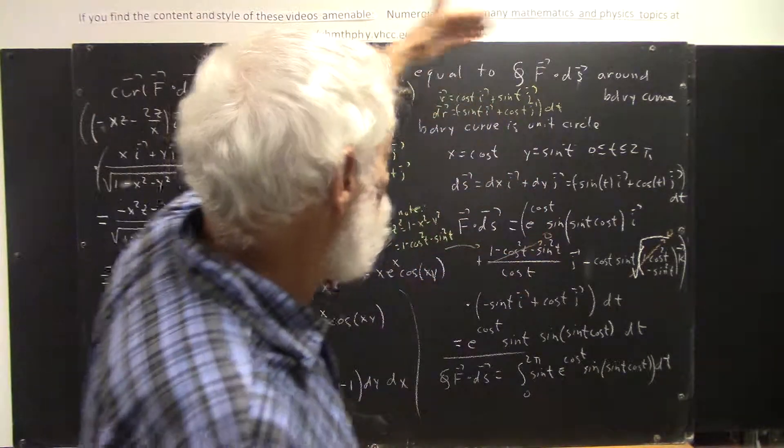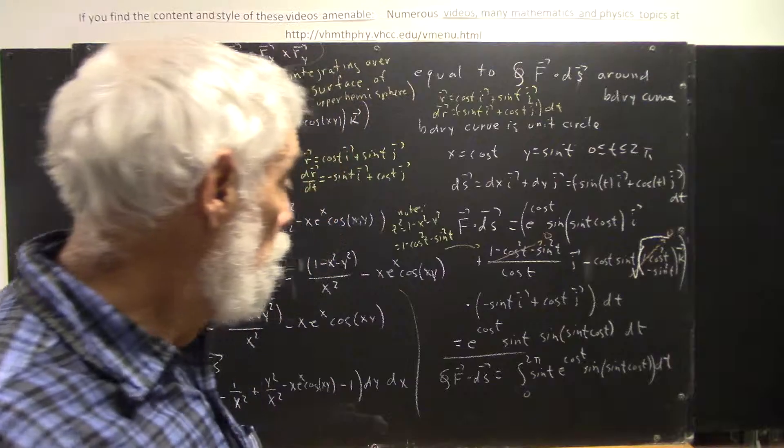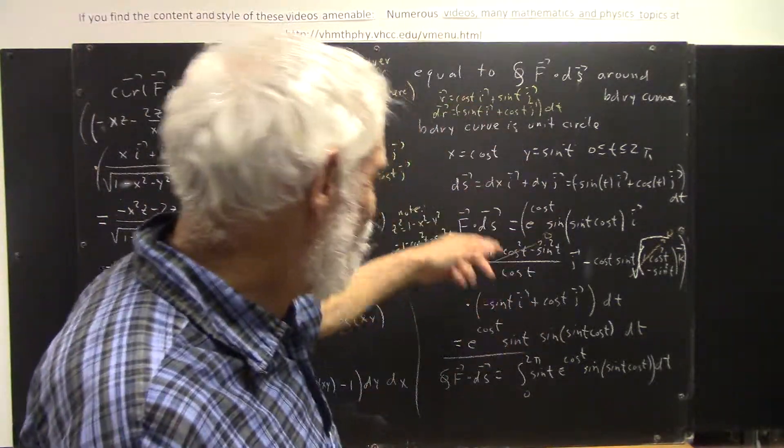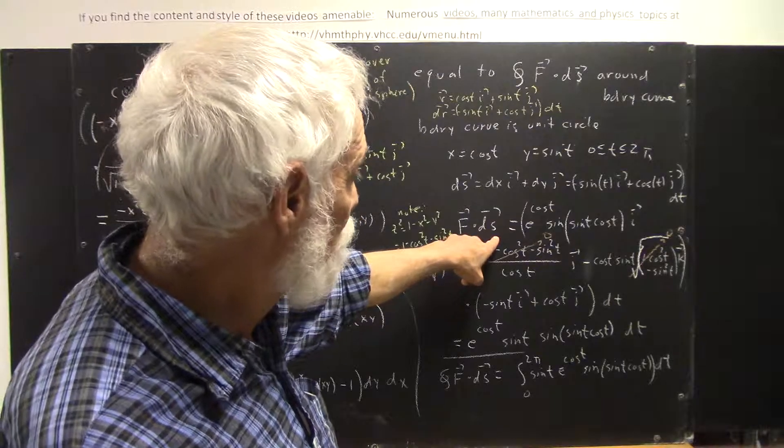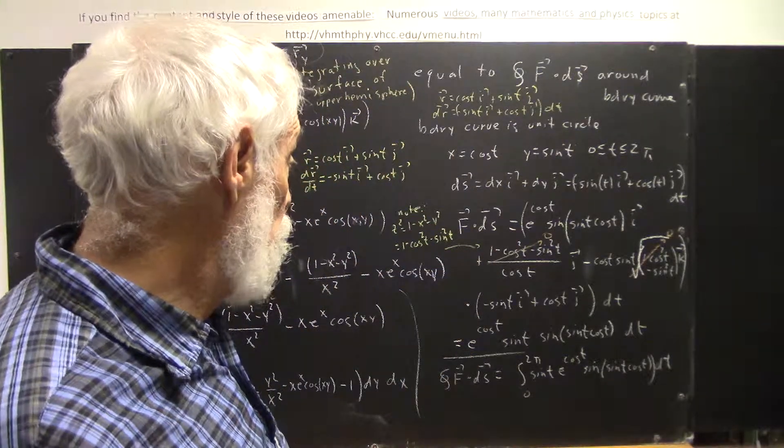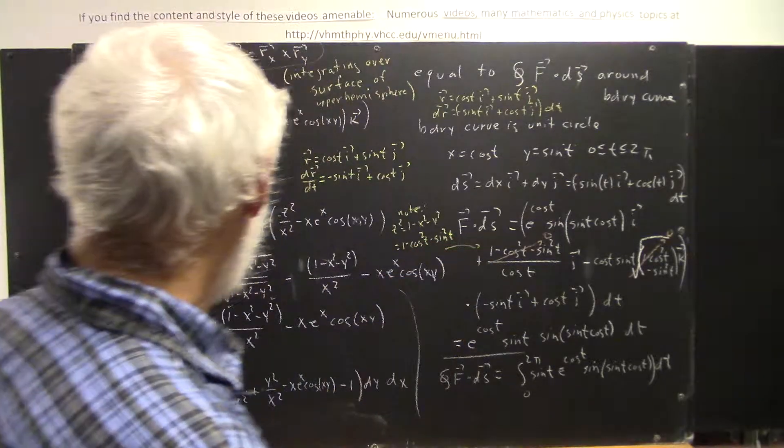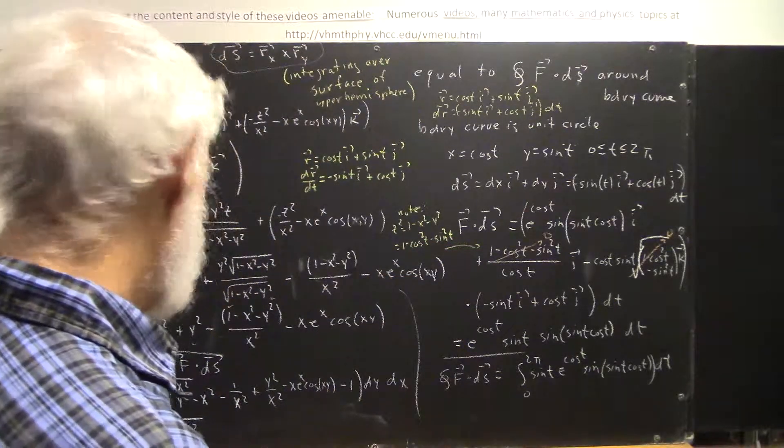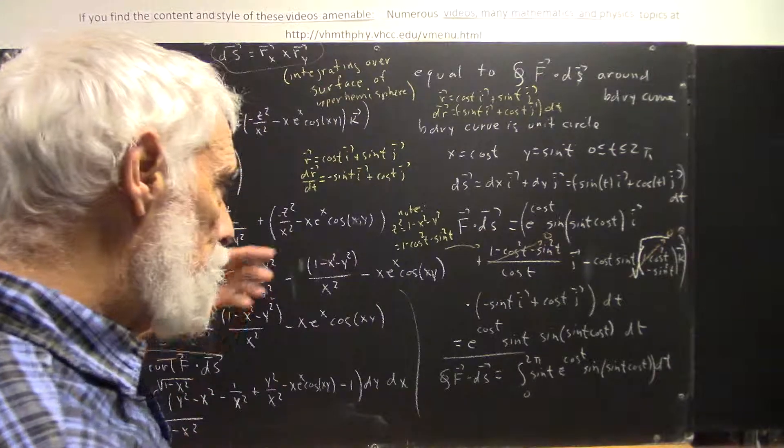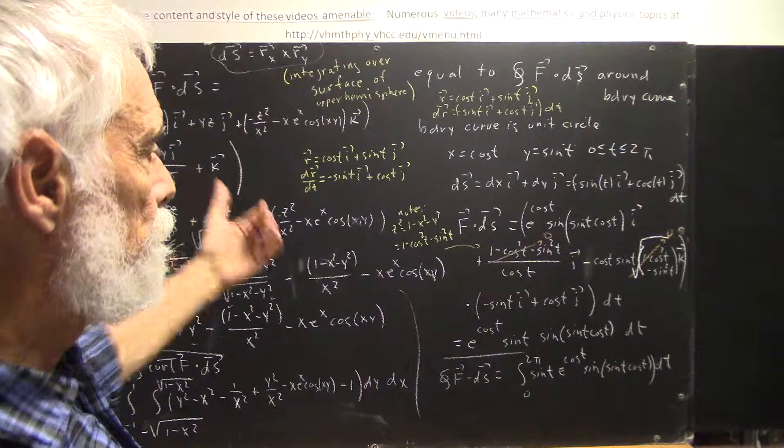Okay, so instead of ds, maybe we'll use dr, f dot dr. And that is a notation that is commonly used. Okay, so I'm going to use the ds. f dot ds would be the same as f dot dr if we wanted to use dr. A rose by any other name. Whether we call this s or r doesn't really matter.